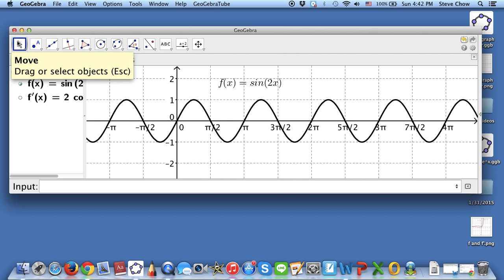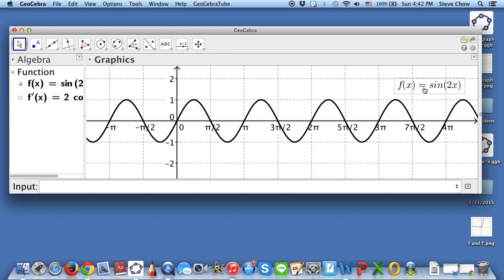So let me click on the select button right here. I'm going to choose this. Move the name to the upper right corner like this. And then we have it. This is the graph for sin 2x.